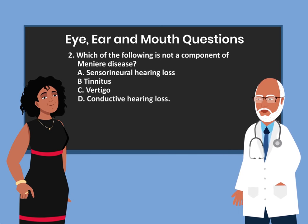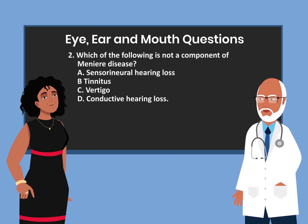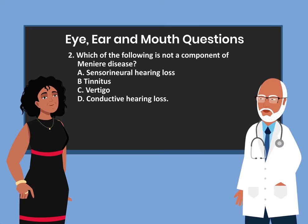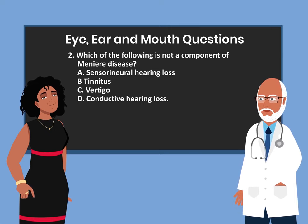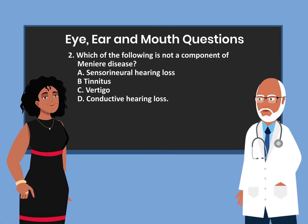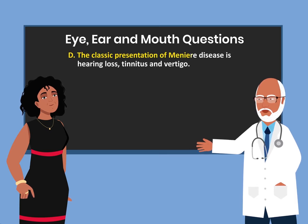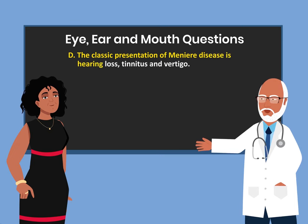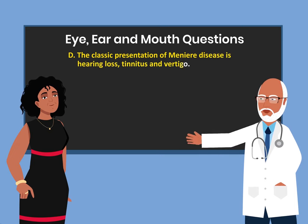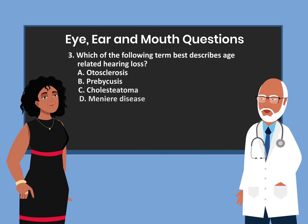Question 2. Which of the following is not a component of Meniere disease? A. Sensorineural hearing loss. B. Tinnitus. C. Vertigo. D. Conductive hearing loss. The answer is D. The classic presentation of Meniere disease is hearing loss, tinnitus, and vertigo.